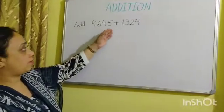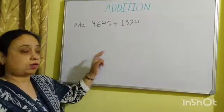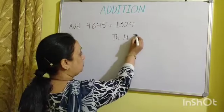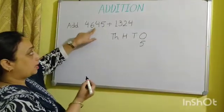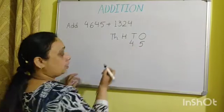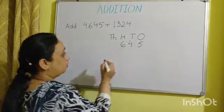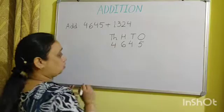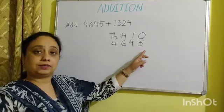We have the numbers 4645 and 1324. First we are going to give them a place and arrange them in columns: thousands, hundreds, tens, and ones. In the ones place we have 5, so we are putting it under the ones column. For tens we have 4, so we will place 4 under the tens column. For hundreds we have 6, so 6 will come under the hundreds column. For thousands we have 4, so we will place 4 under the thousands column. The first number we have here is four thousand six hundred forty-five.